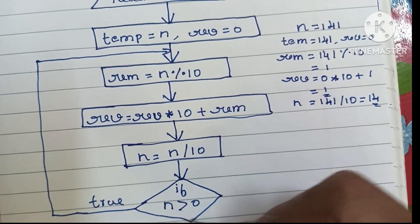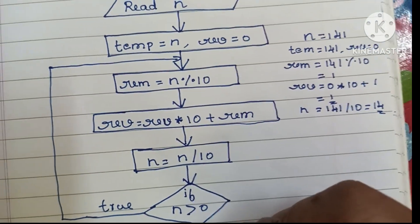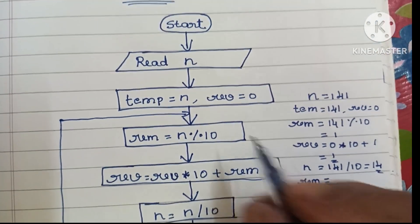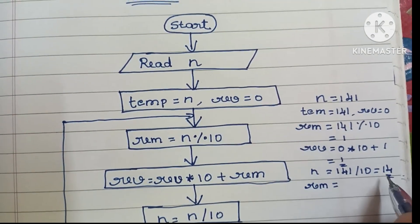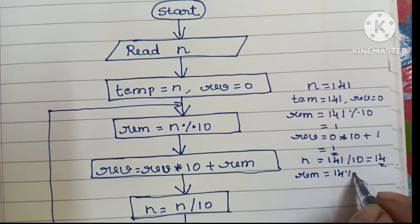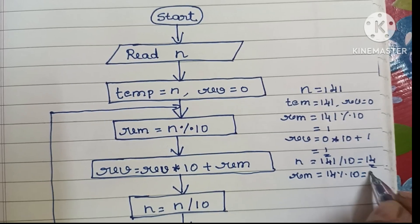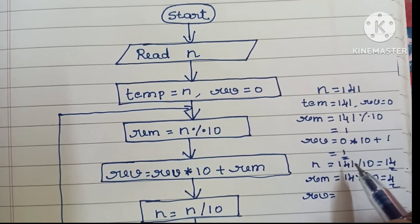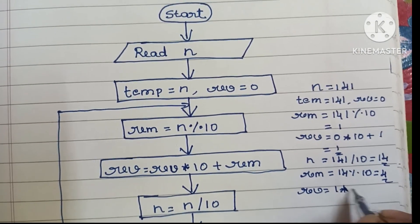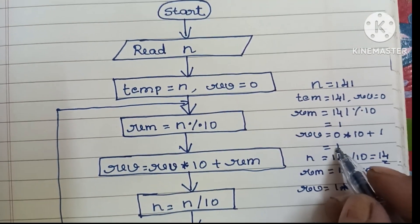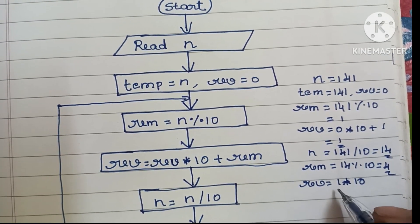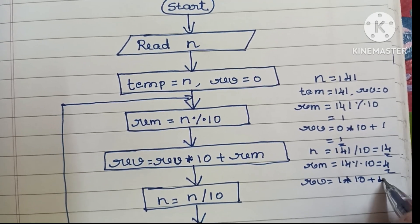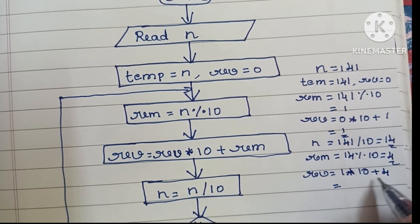In the second iteration, n = 14. rem = 14 modulo 10 = 4. Reverse = (1 × 10) + 4 = 14. Then n = 14 / 10 = 1. We check if n > 0 — n is 1, which is greater than 0, so we continue.